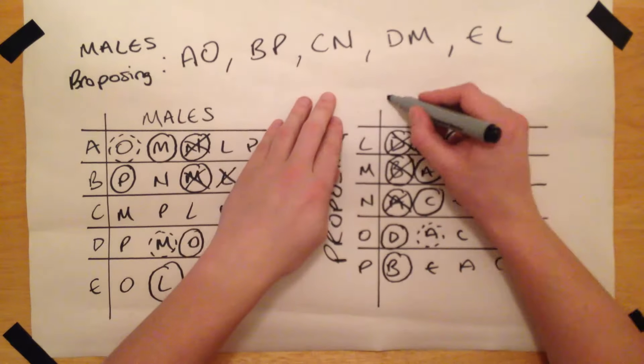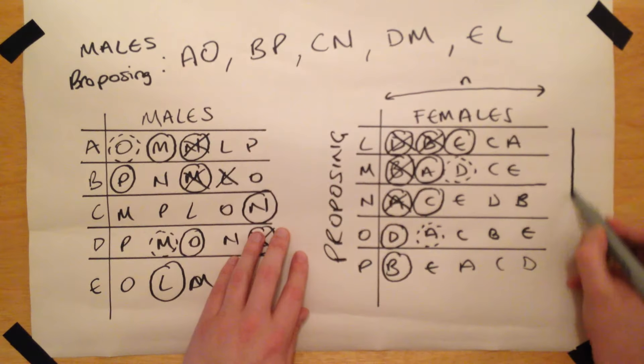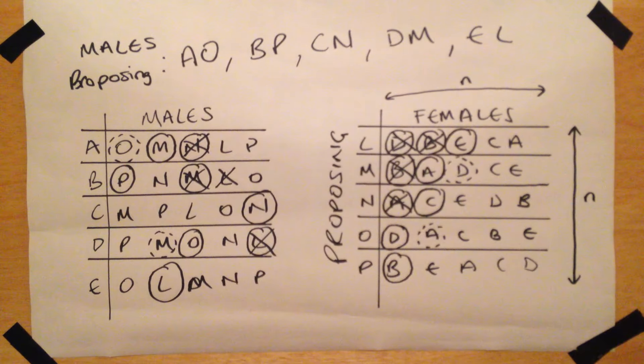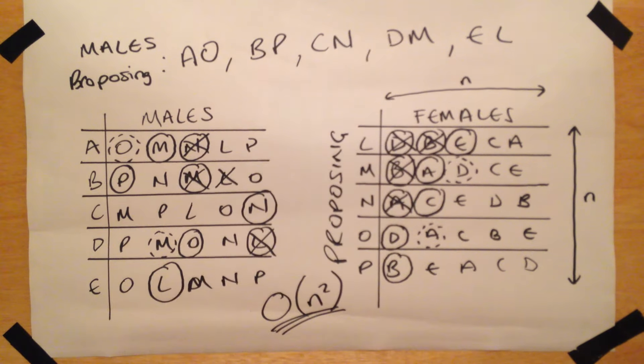We can see that each member of the proposing group can at most propose to each member of the other group only once, as they cannot propose to those who have previously rejected them. All proposals either end in provisional acceptance, which means that no more proposals need to be made, or rejection, whether this is at the time or delayed until a better offer comes along. If there are n members in each group, the computational complexity of the algorithm is at most n squared, and in practice, will often be less.